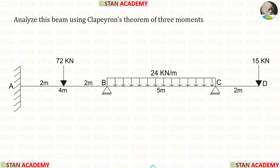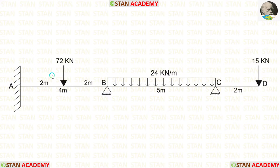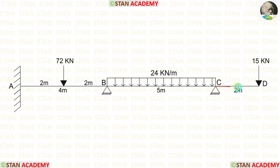Before analyzing, let us see the beam. In this beam, there are two spans: span AB and span BC. There is also an overhanging span CD. In span AB, there is a point load of 72 kN acting at the center. In span BC, there is a uniformly distributed load of 24 kN per meter acting over the full span. In the overhanging span CD, there is a point load of 15 kN acting at point D.